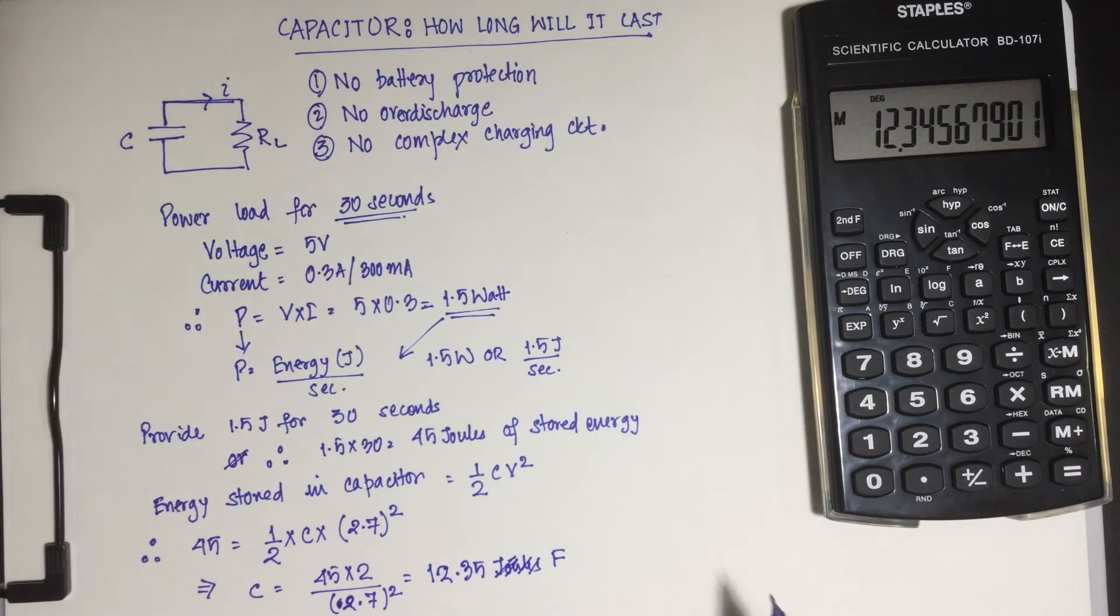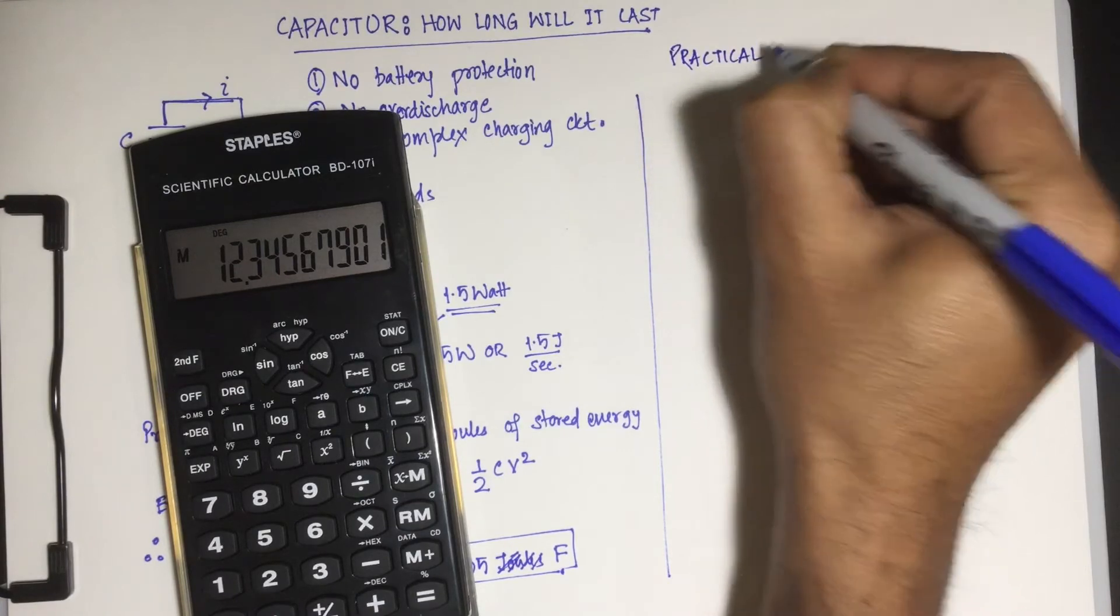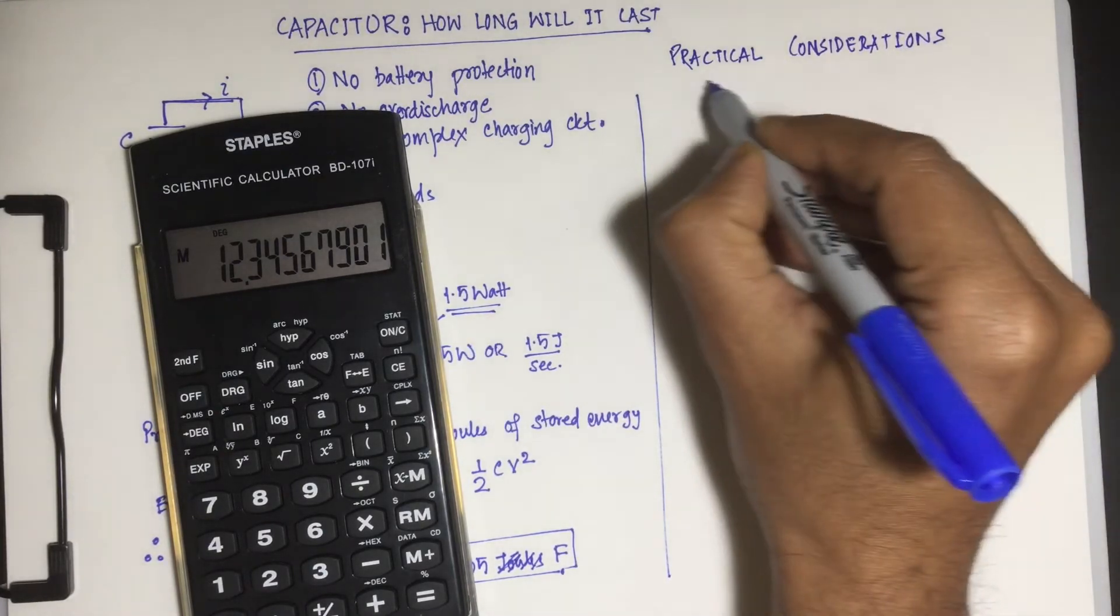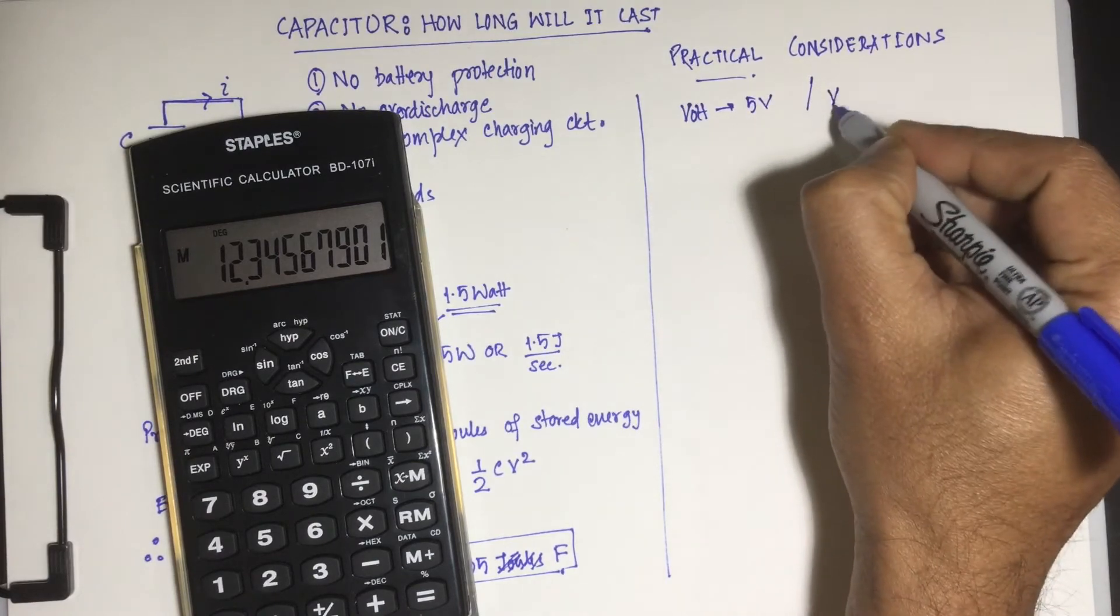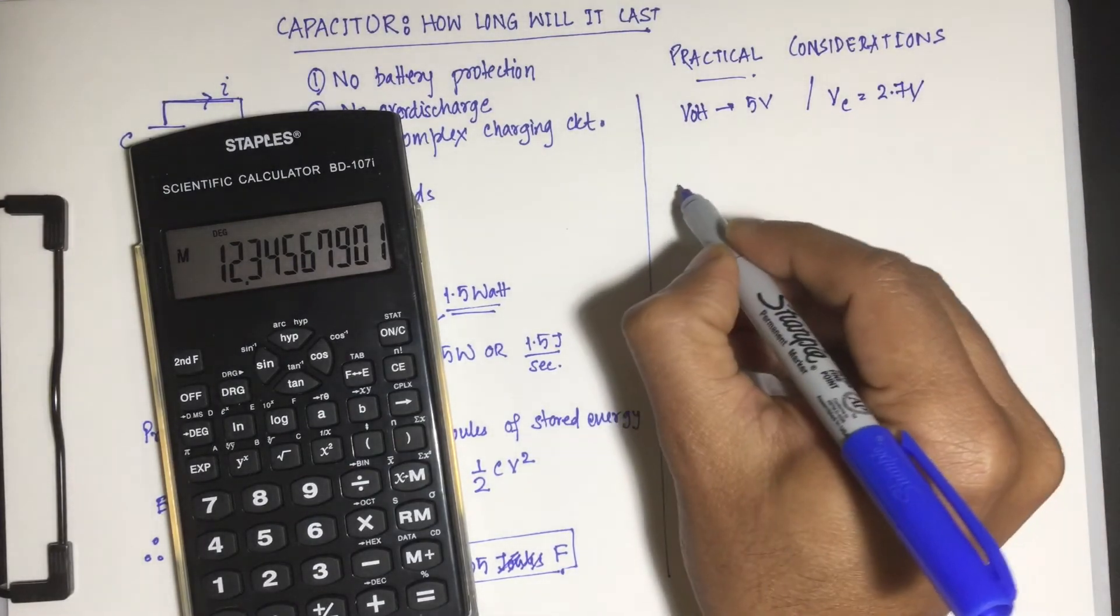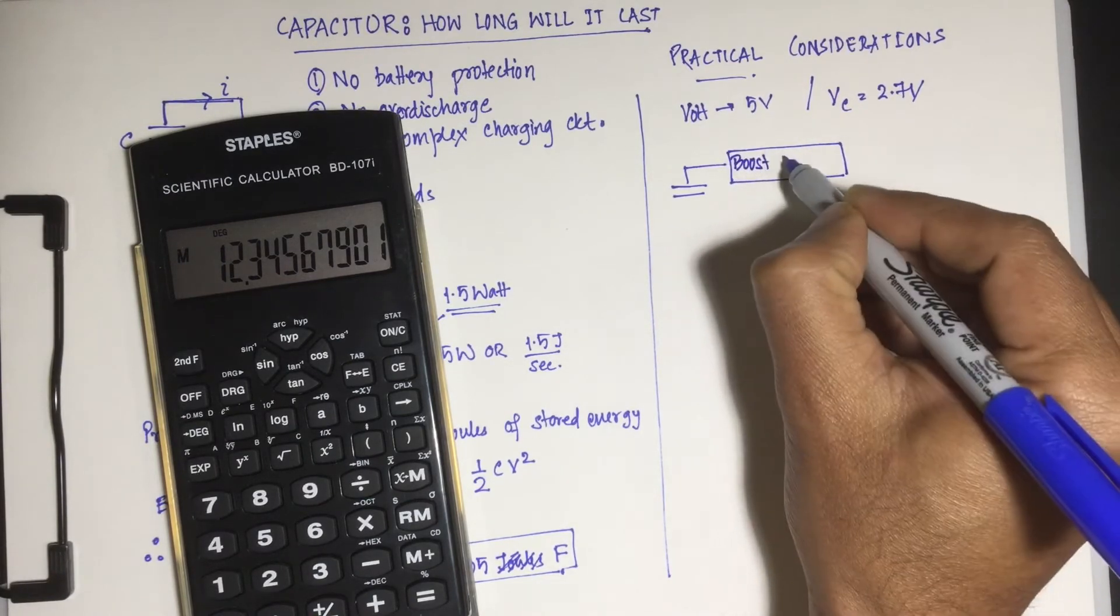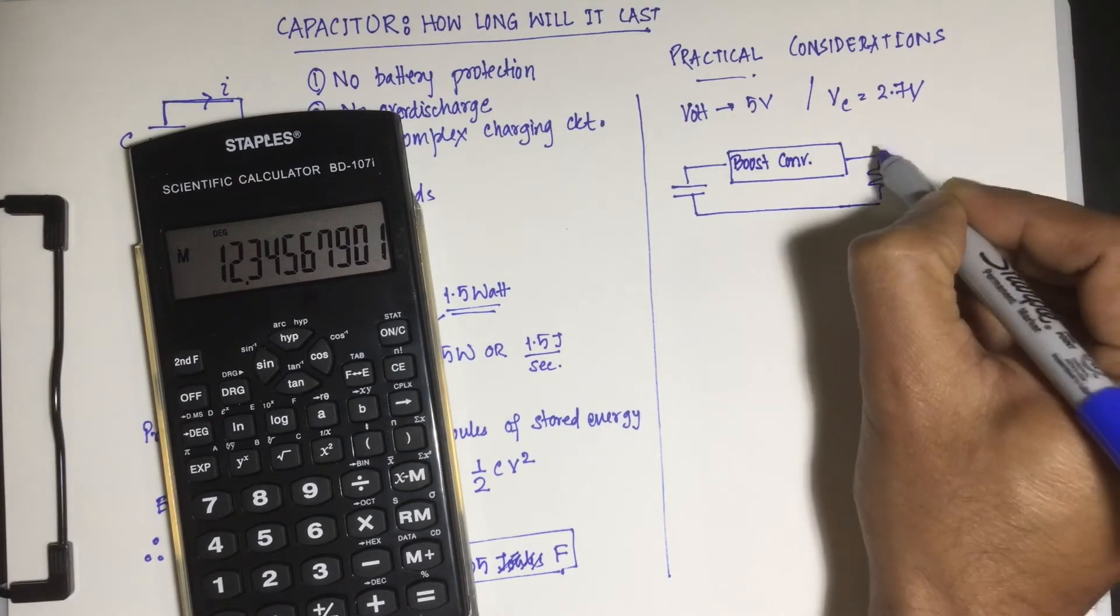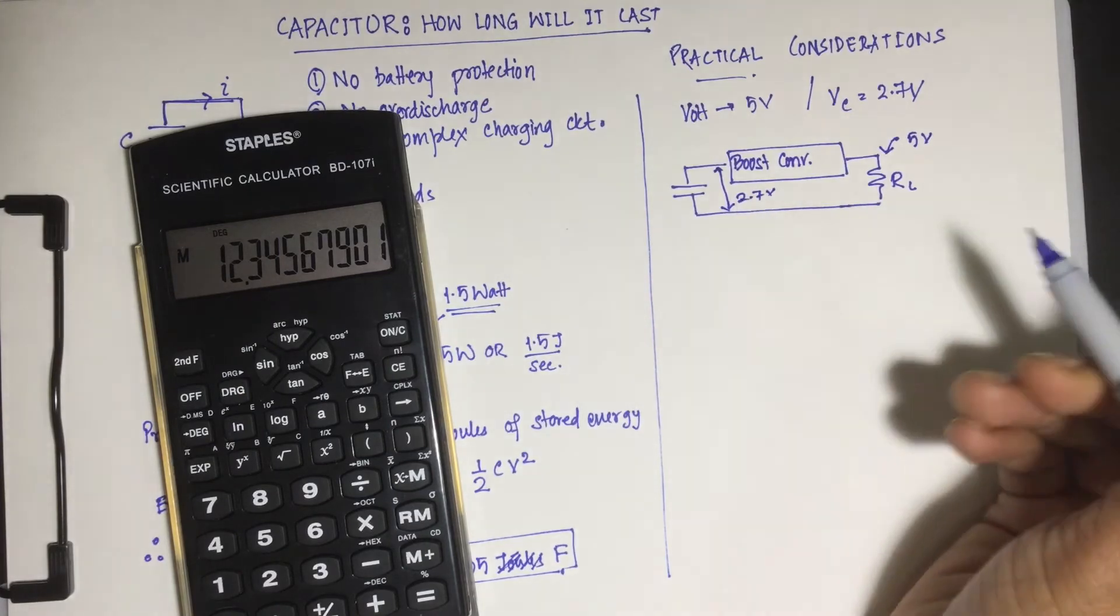But now let's take into consideration some practical aspects, practical considerations. We need, if you remember, voltage that is required by a Pi is 5 volts, whereas the voltage that you can charge the super cap to is about 2.7. So what we need across the cap is some kind of a boost converter. At the load end the boost converter gives 5 volts, and on the input side it gets 2.7.